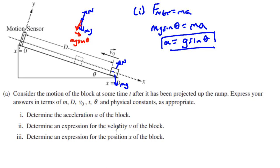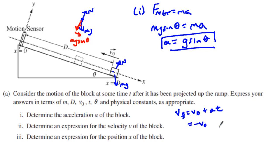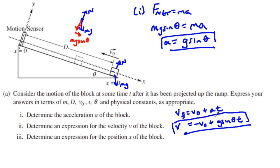For part A2, we need to determine an expression for the velocity of the block. We use v_final = v_initial + a·t. We have to keep in mind the signs since we're dealing with vectors — v₀ is going in the opposite direction, so it's negative v₀. The acceleration is g·sin(θ), giving us: v = -v₀ + g·sin(θ)·t. That is the expression for the velocity of the block.